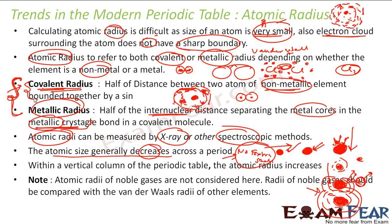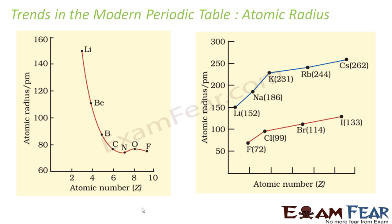One thing to note is that we are talking about covalent radius, metallic radius, and van der Waals radius. Van der Waals radius is really used for noble gases. So the atomic radius we talk about can be covalent radius, metallic radius, or van der Waals radius — we will discuss this in the next chapter. We will see some trends: if you go from lithium to sodium to potassium, they are in the same group, and as shells are added, the size is increasing.